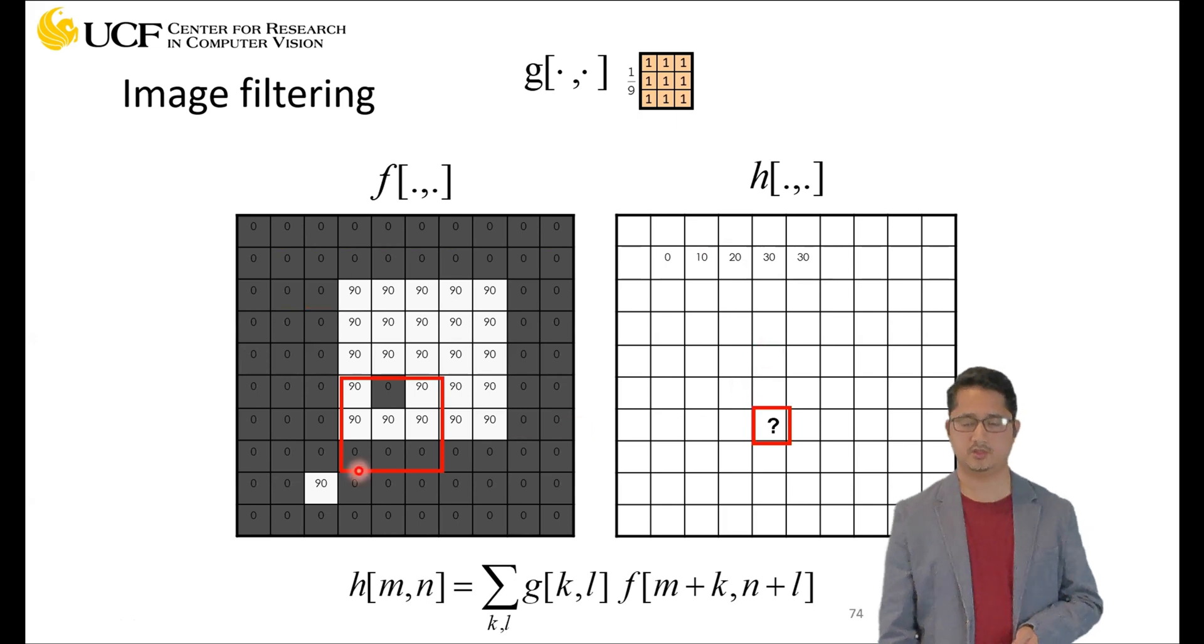You can keep doing that for all the locations. Let's talk about this location. These three on the bottom row are all zero and this is also zero, so if we just try to do quick math here we have four pixels which are zero and five pixels which are 90.